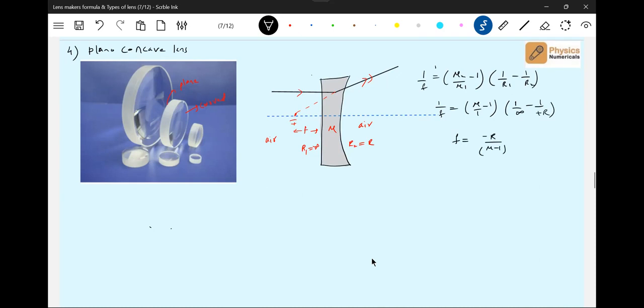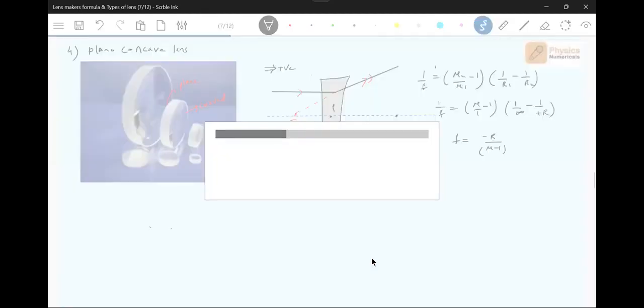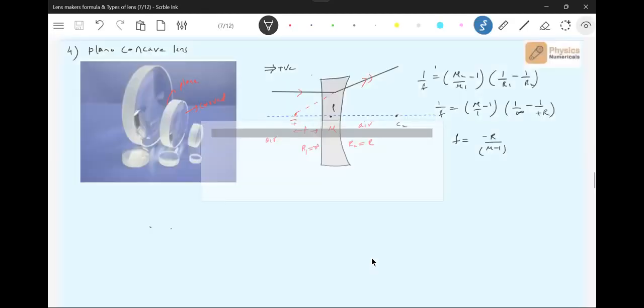It's a diverging lens. Plane or concave, one of the surfaces will have radius of curvature infinity. Why this will be positive? The center of curvature of this will be somewhere here. So how you measure center of curvature, radius of curvature, in the direction of incidentry. So therefore this will be positive.